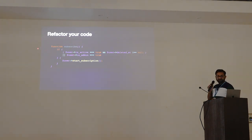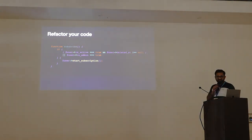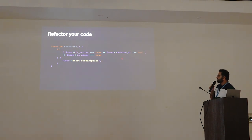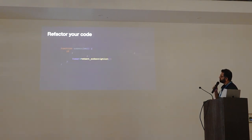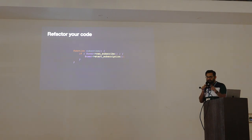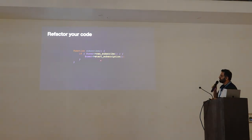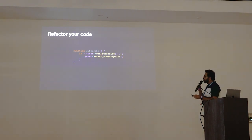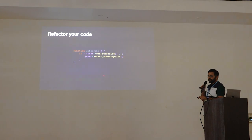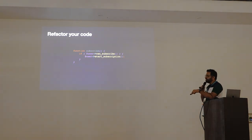Here we have an if condition checking three conditions before starting a subscription: whether the user is active, whether they are deleted, and whether they are an admin. These are all common conditions that can be extracted into a function 'canSubscribe'. Then simply write: if user canSubscribe, start subscription. Note the prefix 'can' — can_subscribe. This prefix is important: 'can do something, if yes, then do that thing.'